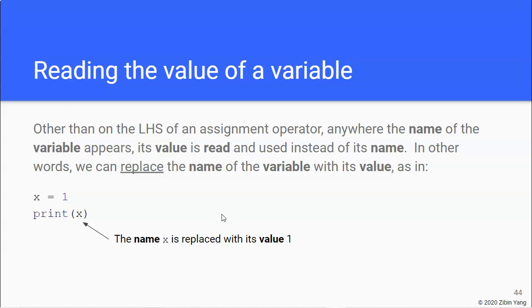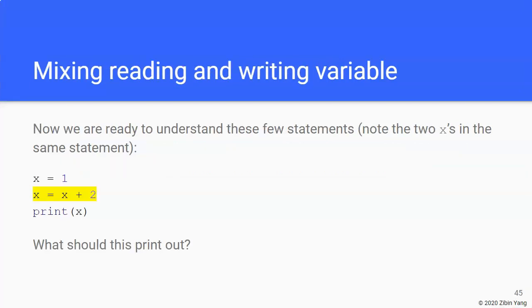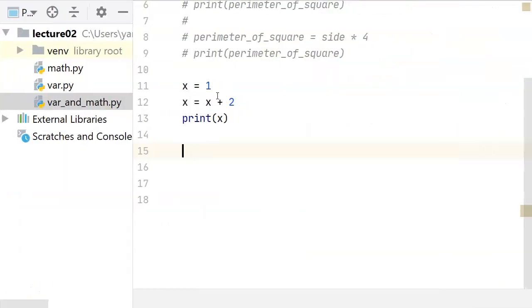So with this knowledge, now we are ready to look at some more interesting statements that we can do with variable and math. So here are a few lines of code. Notice that in this line we have x appear on both sides of the assignment operator. So what happens in this case? Well, let's run it first and see what it prints out.